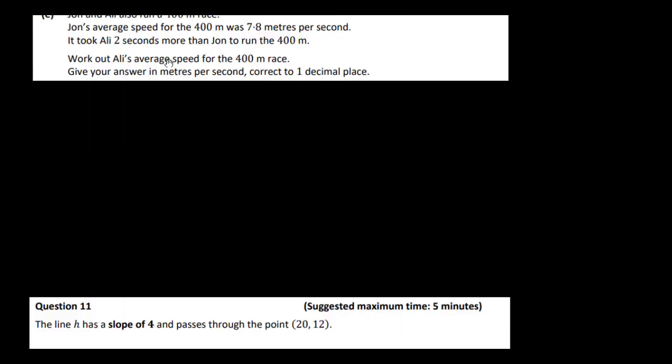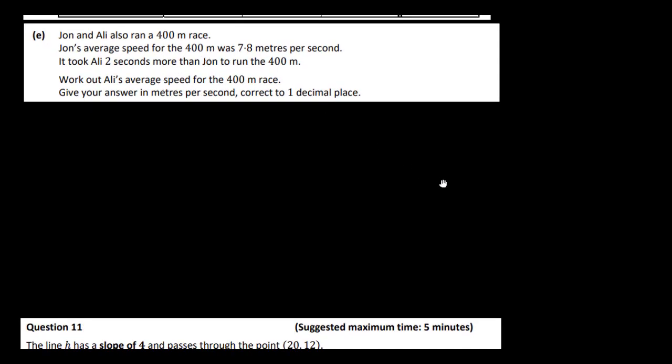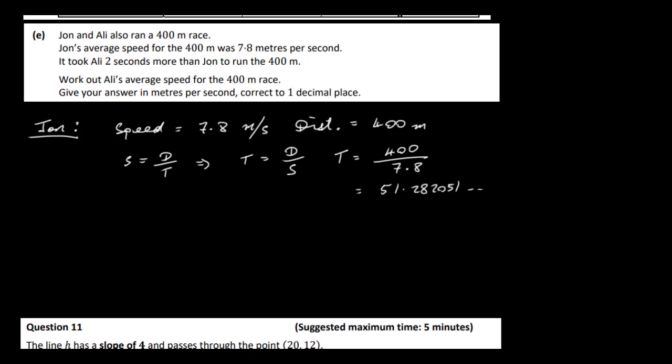John and Ali also ran a 400 metre race. John's average speed for the 400 metres was 7.8 metres per second. The distance is 400 metres. Now it took Ali two seconds more than John to run the 400 metres. Work out Ali's average speed. OK, so in order to do this, we need to know the time it took John to run the 400 metres. So let's do that. Well, we know that speed is distance over time. So that gives us time is equal to distance over speed. And in this particular case, in John's case, time is going to be the distance, which is 400. We've got to divide that by his speed, which is 7.8. That gives John a time of 51.282051 and so on seconds.